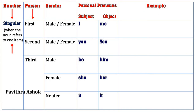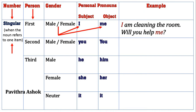First we'll see first person personal pronoun in singular number. For male and female both, subject is I and object is me. Let me give you an example: 'I am cleaning the room. Will you help me?' Here, I used 'I' in the place of subject of a sentence, and 'me' in the place of object of a sentence.